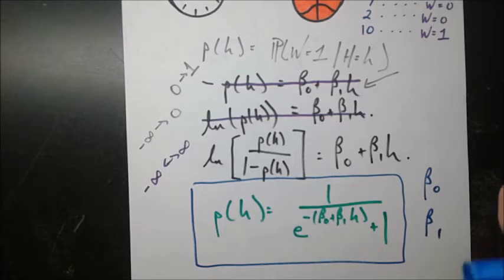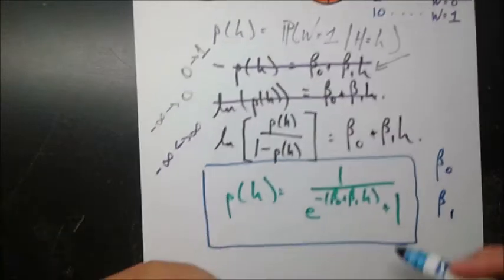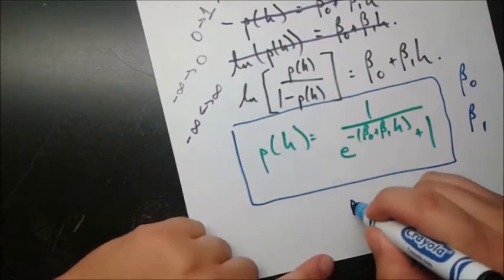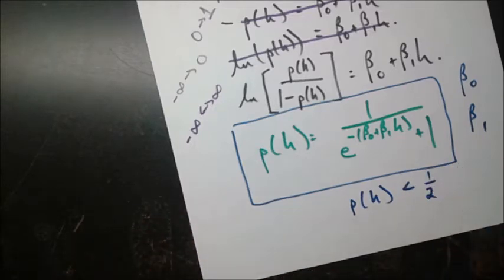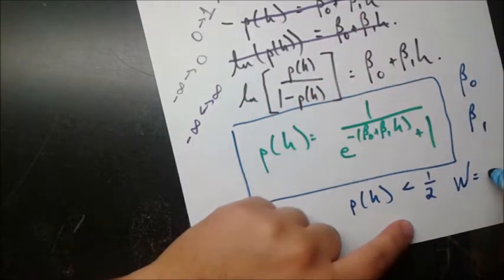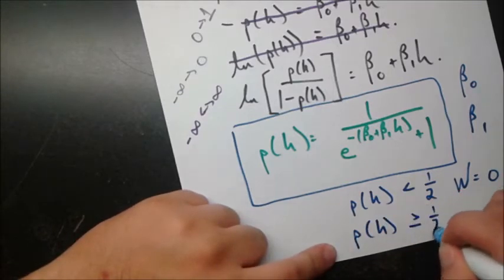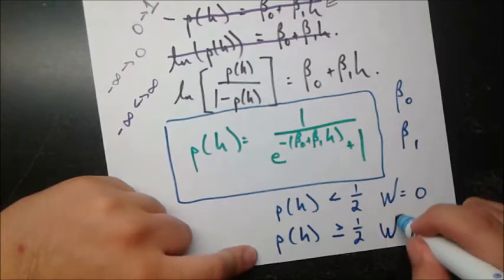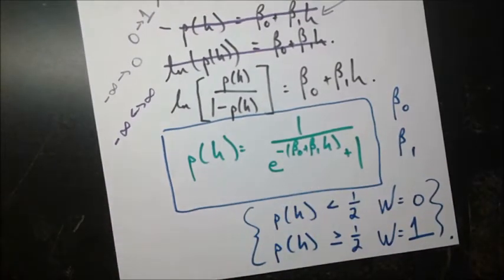So now what do we do with that probability to make a decision about whether we predict the team will win or not? It's a pretty simple rule: if P of H is less than 1 half — so the predicted probability of winning is closer to 0 than to 1 — we predict the team to lose. If P of H is greater than or equal to 1 half, it's closer to 1, so we simply predict that they win. That's how we're going to categorize these games.